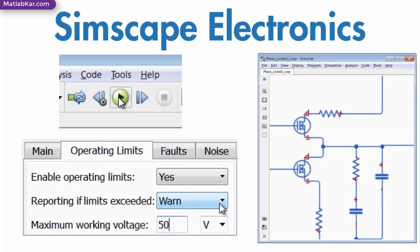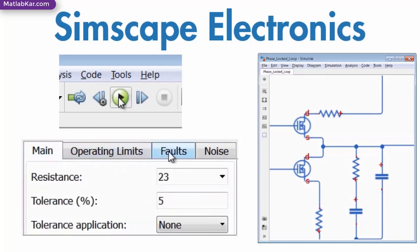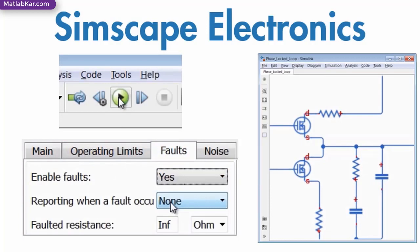You can verify the behavior of your system under non-ideal conditions by applying tolerances to parameter values and by introducing faults into your model.